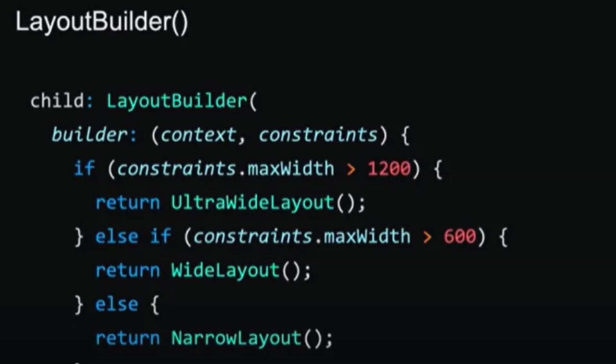The first option is the Layout Builder widget. There is a builder property in Layout Builder that provides us with a BoxConstraints object, which contains constraint information for a particular widget. It determines how our display should be rendered — how its size should be rendered. We can use the screen information via maxWidth and maxHeight. The screen size constraints assigned to our widget help adjust the display accordingly.